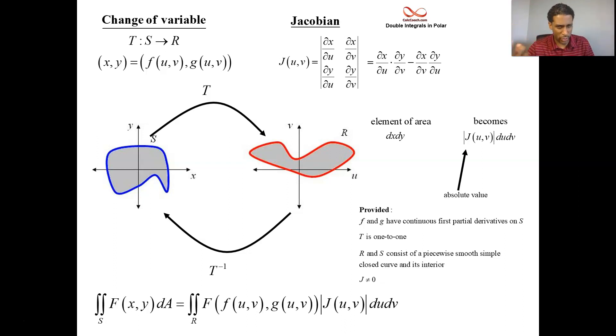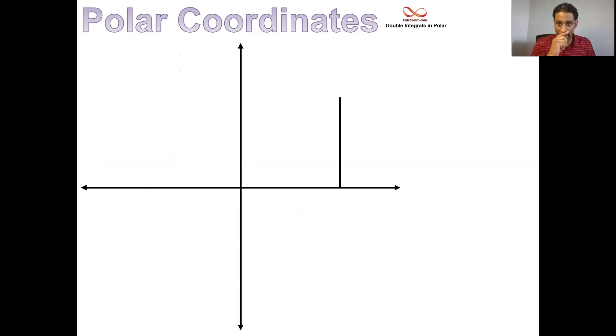That's called change of variable or I like to call it UV sub. It's like U sub, but multivariable U sub. So I call it UV sub. And so, but let's focus on the polar coordinates for a second.